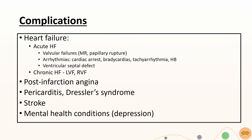Complications of MI include heart failure. Acute heart failure can be due to valvular diseases like mitral regurgitation and papillary muscle rupture, arrhythmias like bradycardia, heart blocks, and cardiac arrests. Other complications include chronic heart failure, angina, pericarditis, Dressler syndrome, stroke, and mental health conditions like depression.